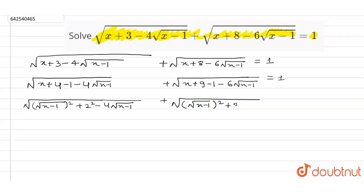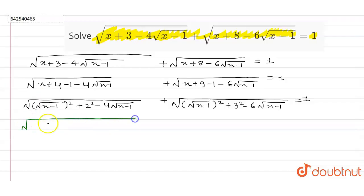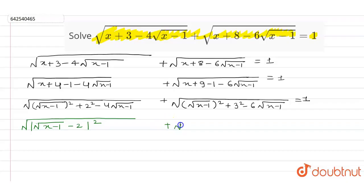I can also write it as x + 3 + 3² − 1. So I write this entire equation as √((√(x − 1) − 2)²) + √((√(x − 1) − 3)²) = 1. So I can cancel this square by this root, and this square by this root.